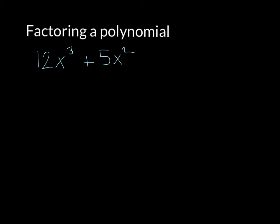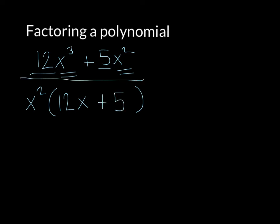So if I have 12x cubed plus 5x squared, looking at the constants, 12 and 5 have no factors in common, so you cannot factor out anything with the constants. Now let's look at the variables — you have x cubed and x squared. The lowest power in there is x squared, so x squared is the most we can take out. That means x squared is the greatest common factor between these two terms. Dividing each term: 12x cubed divided by x squared is 12x, and 5x squared divided by x squared is 5. So the factored polynomial is x squared times (12x + 5).